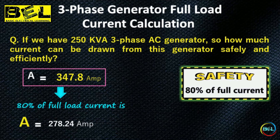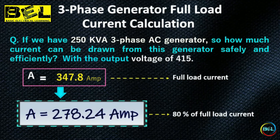So 278.24 ampere is the safe current. If you draw 278 ampere from a 250 kVA three-phase AC generator, the generator will work properly and efficiently. However, if you draw more than 278 ampere — say 300 ampere — the generator will burn out or will not work efficiently. The maximum full load current is 347.8A, but always take 80% (278.24A) for safe operation.